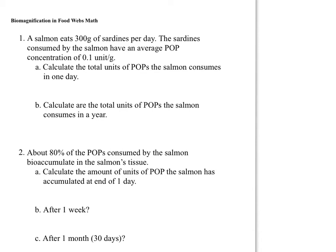Biomagnification in food webs math problem. Number one: a salmon eats 300 grams of sardines per day. The sardines consumed by the salmon have an average POP concentration of 0.1 units per gram. A POP is a persistent organic pollutant — this could be a PCB, DDT, or some other persistent organic pollutant.